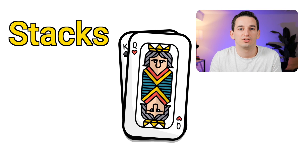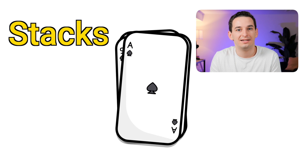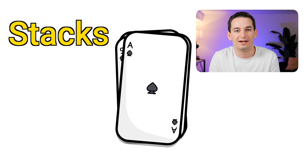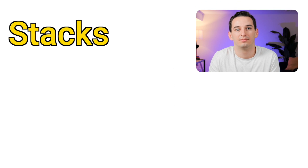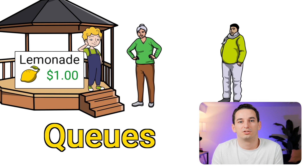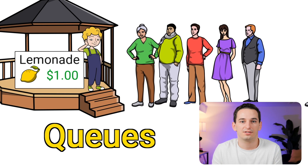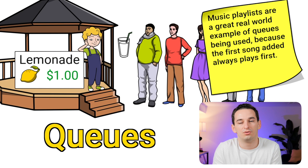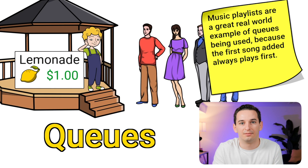Stacks are last in first out — whenever data is added to a stack it's put on top, and whenever data is removed it is removed from the top. Queues work just like queues in real life — they are first in first out, so whoever is first in line is the first one to get out.